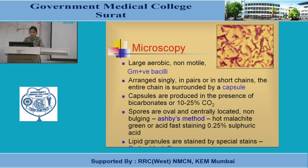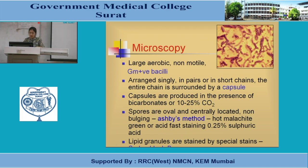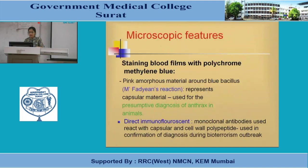Spores are oval, centrally located, and non-bulging. The Ashby's method using hot malachite green or acid-fast staining with 0.25% sulfuric acid is used for staining spores. Lipid granules are stained by special methods such as Cowdry type B. Staining a blood film with polychrome methylene blue reveals amorphous material (pinkish border) surrounding the bacillus, representing capsular material, allowing a presumptive diagnosis of anthrax.